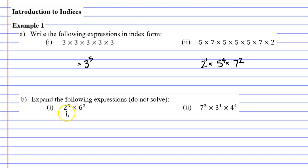In the first part, we've got 2 to the power of 3 times 6 to the power of 2. That means we've got three 2s: 2 times 2 times 2. And we have two 6s: times 6 times 6. I should be putting equal signs in front of my answers.